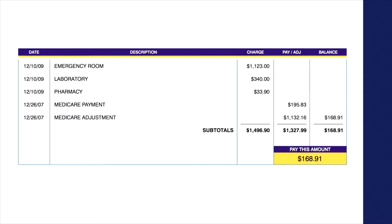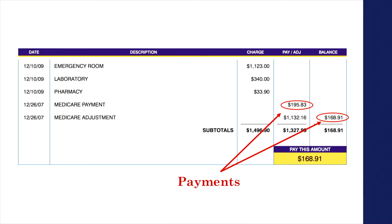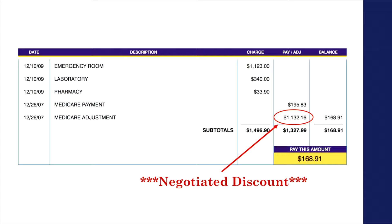We've got an emergency room charge, a lab charge, and a pharmacy charge, and there's a $1,500 list price on this bill. There are also payments on this bill — payments from the insurer and payments from the patient. If you get a PhD in economics you have to take a lot of math, and one of the things they teach is that $195 plus $168 doesn't equal $1,500, and that's because there's this huge negotiated discount.